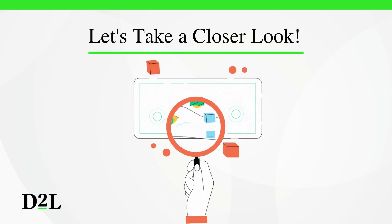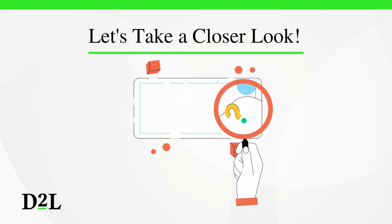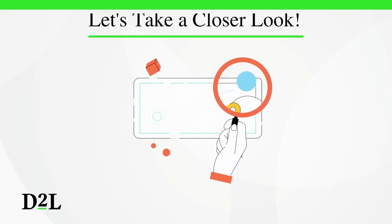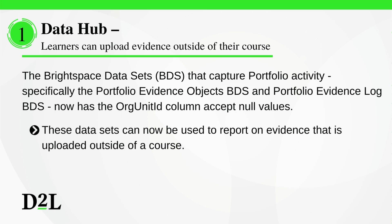Let's take a closer look at this month's features. In this release, the Brightspace datasets, or BDS, that capture portfolio activity — specifically the Portfolio Evidence Objects BDS and Portfolio Evidence Log BDS — now accept null values in the org unit ID column.